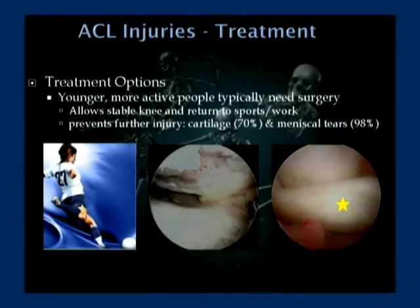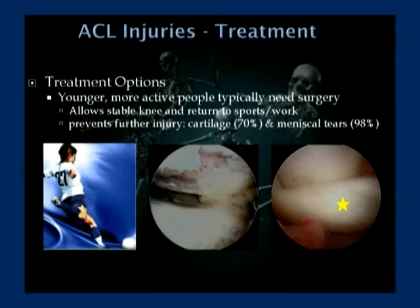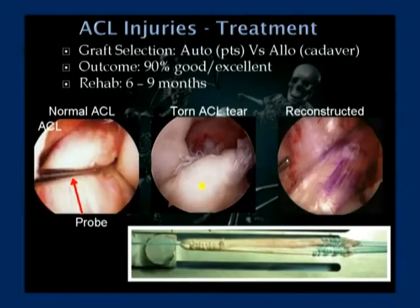As for treatment, age doesn't matter — activity matters. We fix ACLs on 65- and 70-year-olds depending on their activity level. We fix them because it allows return to an active lifestyle, particularly work or sports. We also know that without an ACL, 70% of those patients will go on to lose cartilage over time. Nearly all patients with an ACL-deficient knee will end up tearing their meniscus. So for active people with an ACL tear, we recommend fixing it to allow return to sports or work, but also to prevent these additional problems.